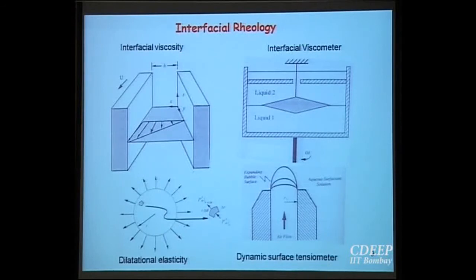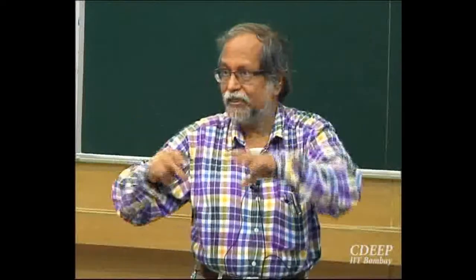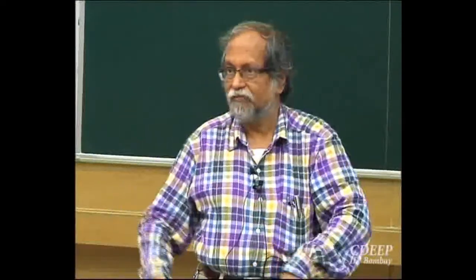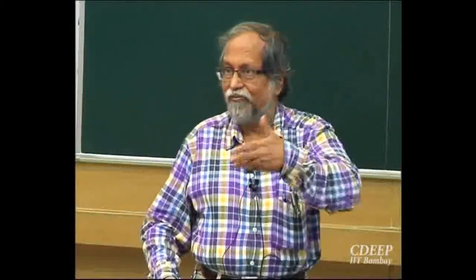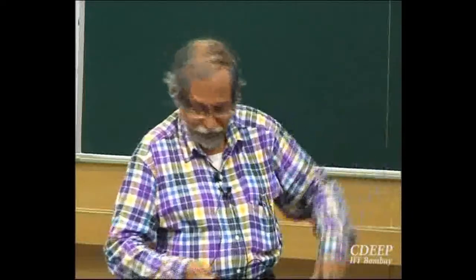A dynamic surface tensiometer works by blowing a bubble and measuring the force required for air to expand it, which depends on the dilatational properties of the interface and how surfactants adsorb. The rate at which surfactants adsorb changes the elasticity of the surface, so you can find out adsorption characteristics of surfactants from this measurement.